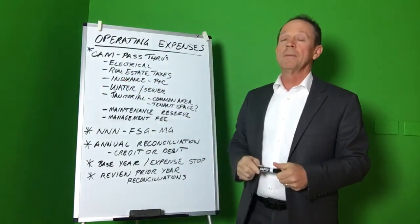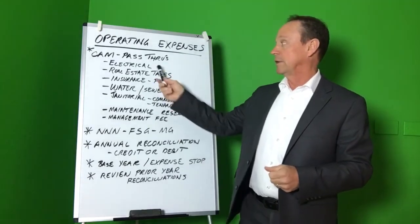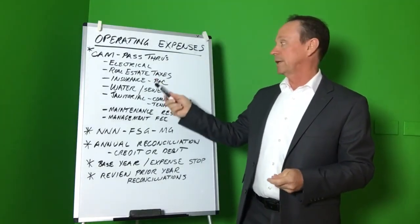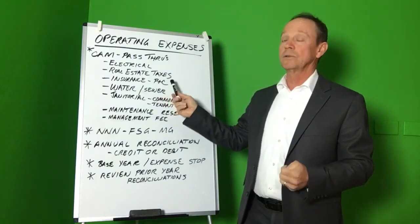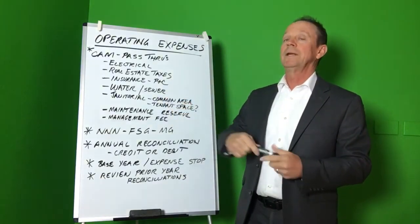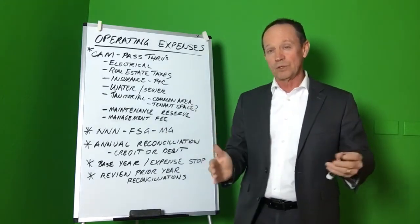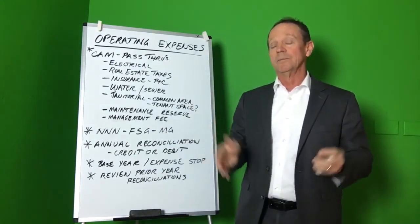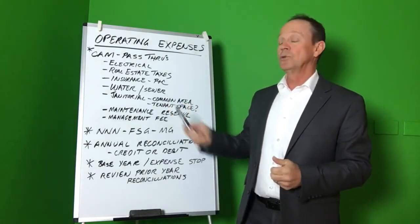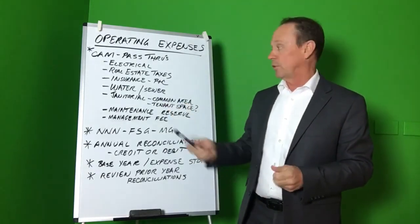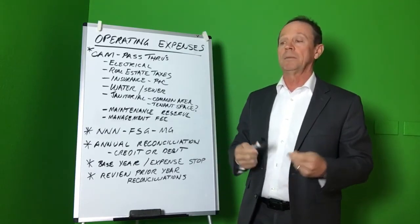Examples of what these common area maintenance expenses are: the electrical, the real estate taxes, the insurance — and that's property and casualty insurance for the building itself. The tenant is always going to want to get the insurance for the inside of their own space themselves and their tenant responsibility space. Also the sewer and water bill for the building.